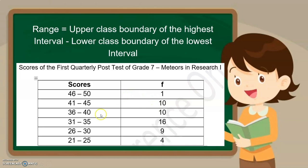So let us have this table. For this measure of variability for grouped data, what I'm going to give you is the table with the scores and with the frequency. And then you're going to get the other variables needed to compute for the other measures of variability. This table shows the scores of the first quarterly post-tests of Grade 7 Mithyors in Research 1.